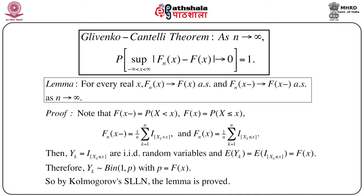In order to prove this theorem, let us first consider one small lemma, which states that for every real x, F_n(x) → F(x) almost surely, and F_n(x-) → F(x-) almost surely, as n goes to infinity. Note one important property of the distribution function: it is right continuous, but not necessarily left continuous. So to deal with those points at which it is only right continuous, we check whether F_n(x-) → F(x-) almost surely.